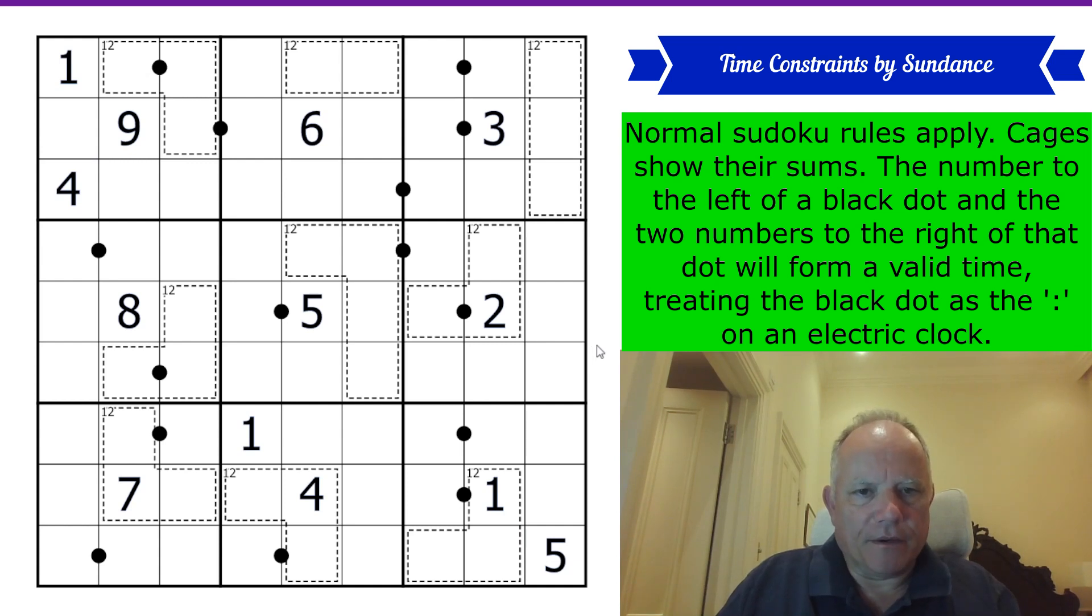So the black dots are not Kropki dots. That's vital. So let's start with this 12 cage, which is 4 cells, doesn't include a 5. I think that has to be 1, 2, 3, 6 to make 12 without using a 5.